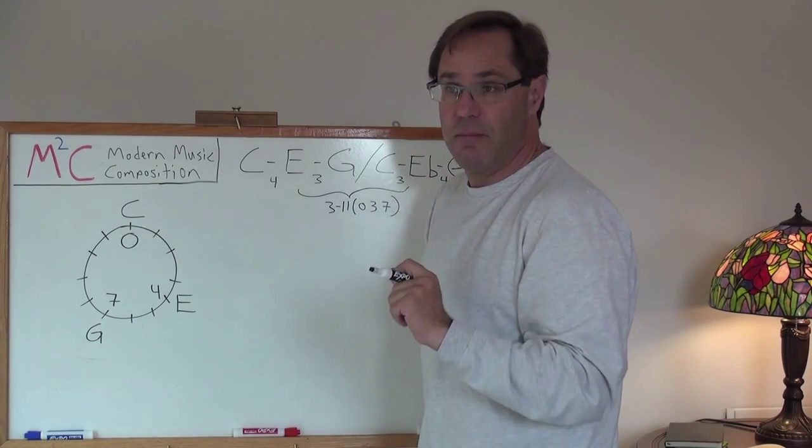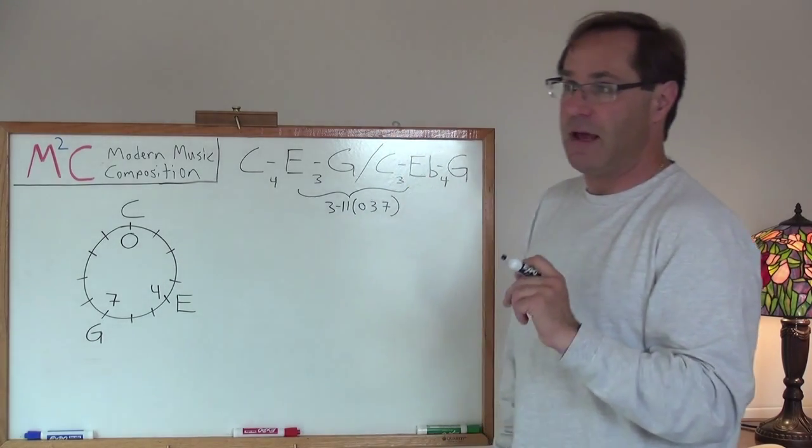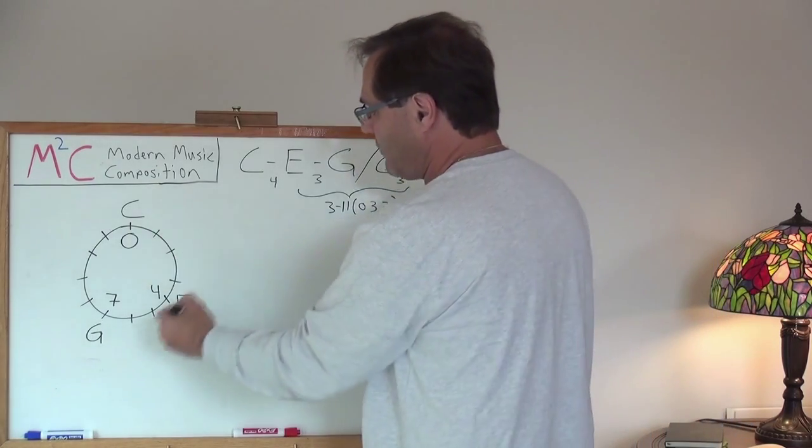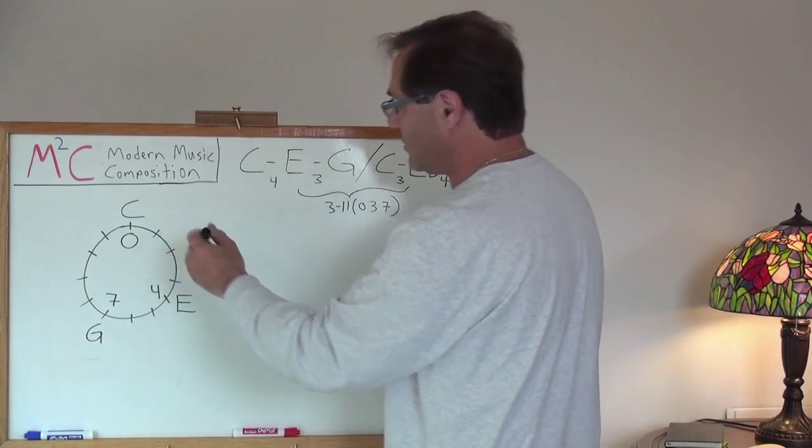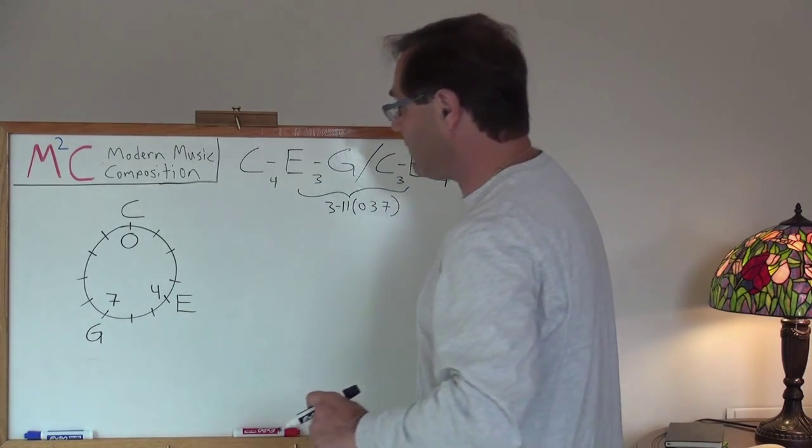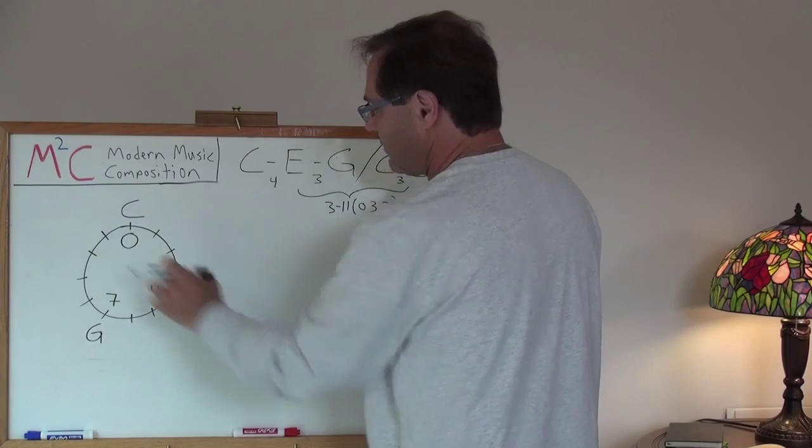Let's talk about the major triad, and we will calculate its prime form. Let's do that right now. So once again, we've got a graph here with respect to the chromatic scale. I've omitted all notes except for the triad itself, and I've given the nomenclature for the numbering.